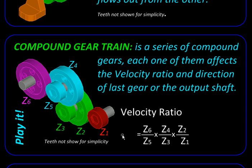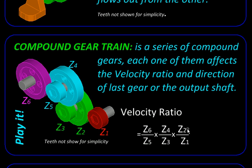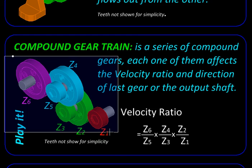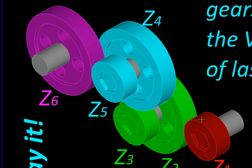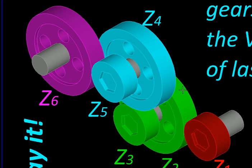In a compound gear train, the velocity ratio is not just decided by the first and the last gear but all the intermediate gears contribute to it. Therefore you see all the terms z2, z3, z4, z5 — the number of teeth on the intermediate gears — appearing in the formula. You can see the first gear rotating much faster compared to the last one, and successively the speed is reducing: the green one is rotating a little slower, the blue one even slower, and the purple one is the slowest.